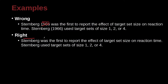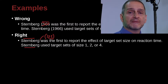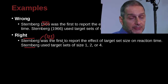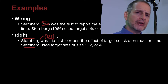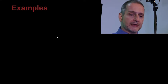So here we just have the name. Sternberg was the first to report the effect size, and then later Sternberg again used the target set — we don't need to do anything special. Now of course we could reference the page number if we wanted to, for example 123, if this information was specific to that page. But if the information refers to the whole general paper, we can just use the name. So MLA is more flexible this way than APA.